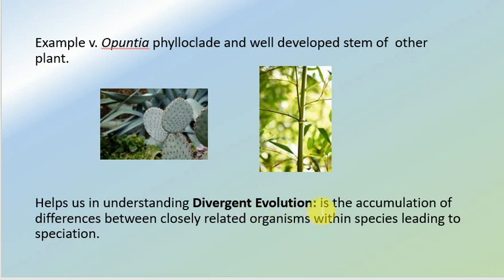Divergent evolution is the accumulation of differences between closely related organisms within a species, leading to speciation. In simpler words, divergent evolution is the evolution of organs or species that were similar when in the same habitat, but due to changes in habitat, the same organs had to change their functions according to the new environment.